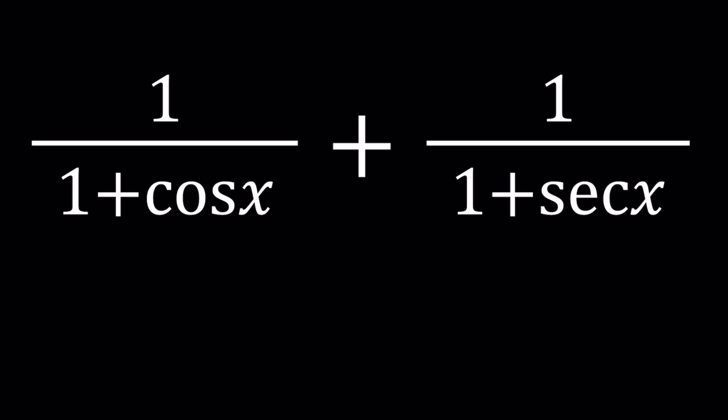So first of all, I want you to notice that secant and cosine are reciprocals, so they have a special relationship. At the end, I'm going to show you a graph which kind of explains what is going on here. So we're going to generalize the results. Let's go ahead and get to work.